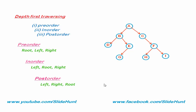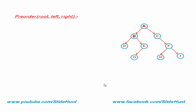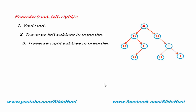Next we learn how to traverse a binary tree using pre-order, in-order, and post-order traversal. First we learn pre-order traversal. In pre-order, first we visit the root, then traverse the left subtree in pre-order, and then traverse the right subtree in pre-order. Consider this binary tree — now we traverse it using pre-order traversal. To traverse a tree in pre-order, we apply these three steps at each node. First, visit the root node. The root node of this tree is A, so node A is visited.